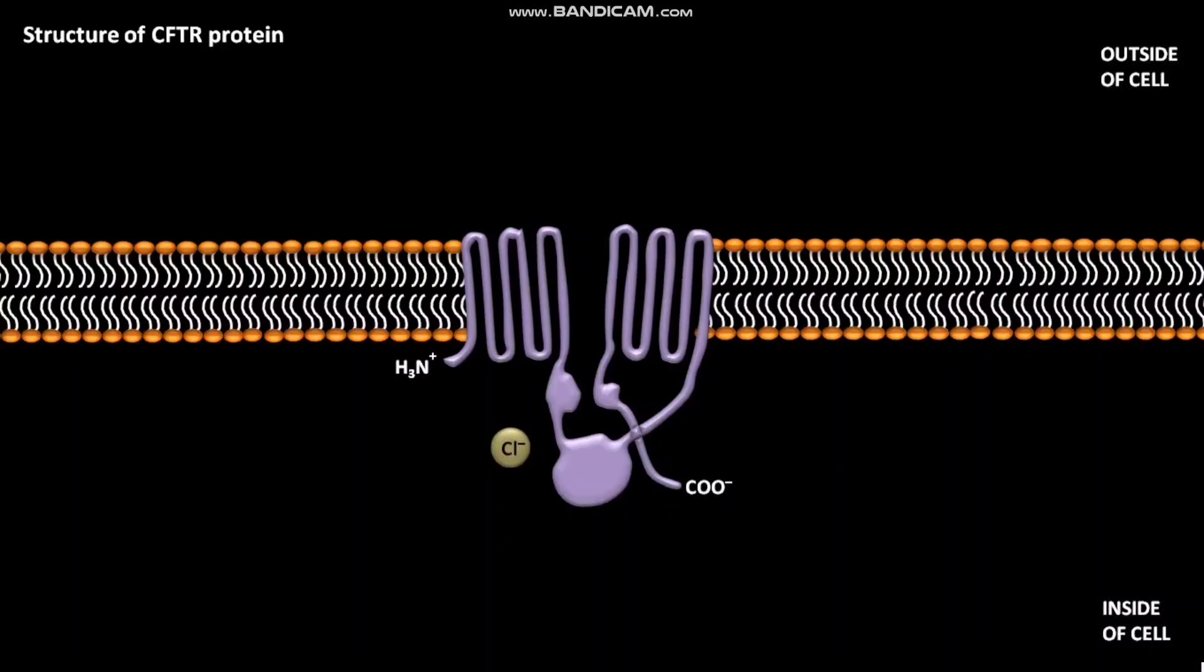Normal CFTR protein is found in the plasma membrane of the cell. The CFTR protein has two sets of transmembrane domains. These transmembrane domains anchor the CFTR protein in the plasma membrane.